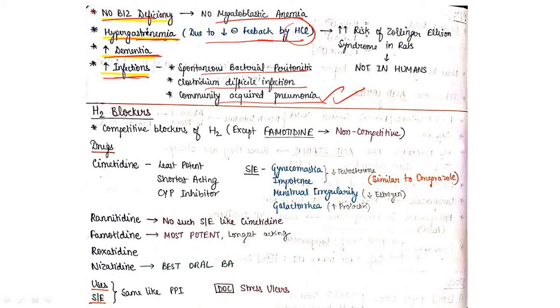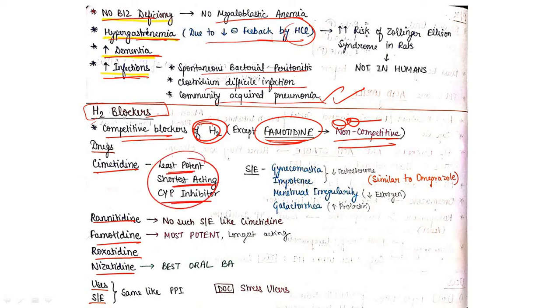Now come to the H2 blockers. They are competitive blockers of H2 receptor except famotidine, which is non-competitive. This is important - all H2 blockers are competitive blockers but one exception is famotidine, which is non-competitive. Coming to the drugs: first is cimetidine, then ranitidine, famotidine, roxatidine, and nizatidine. Rani is a girl and suppose she is famous, she becomes famous. Cimetidine is least potent, shortest acting, and CYP inhibitor. Watch general pharmacology video - this thing will get clear. And some side effects are uniquely associated with cimetidine such as gynecomastia and impotency, menstrual irregularity and galactorrhea. These are the side effects which are specific with cimetidine.